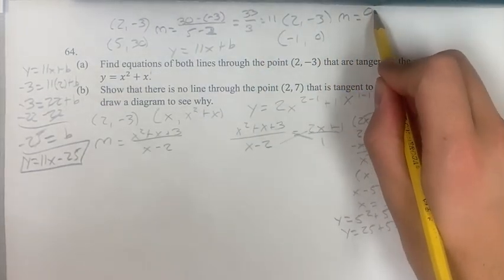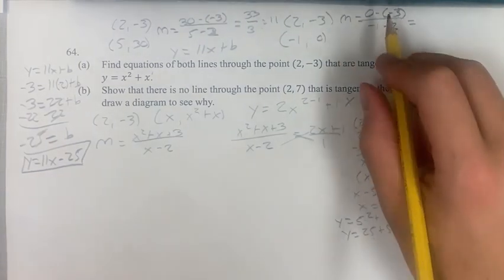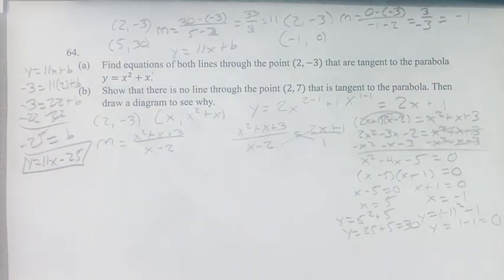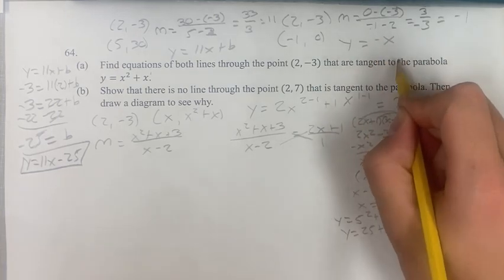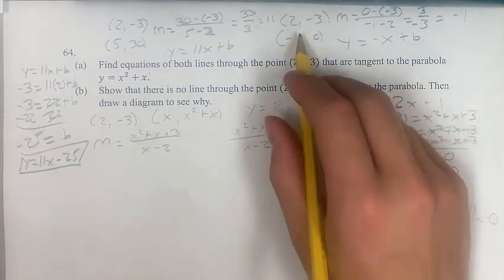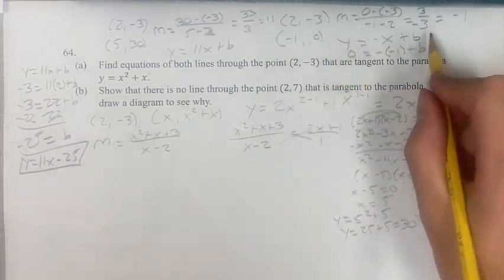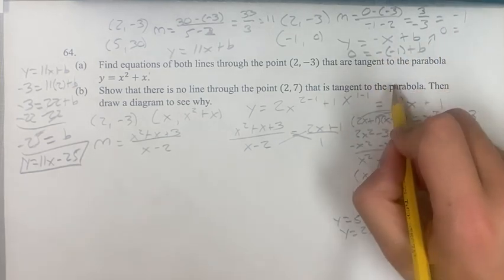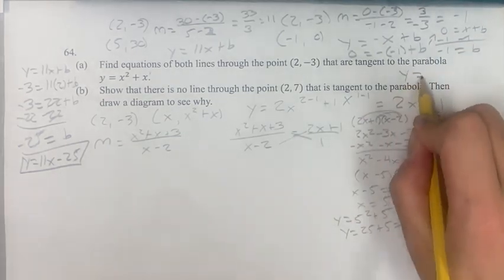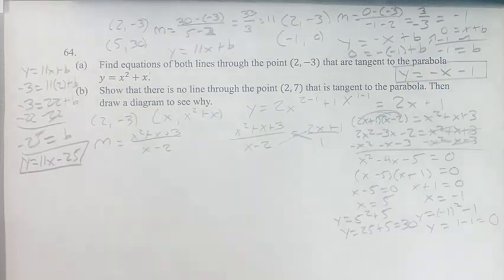For the second line through (2, -3) and (-1, 0), the slope is 0 minus negative 3 over negative 1 minus 2, which is 3 over negative 3, so the slope equals negative 1. So y equals negative x plus b. Plugging in (-1, 0): 0 equals 1 plus b, so b equals negative 1. The equation is y equals negative x minus 1.